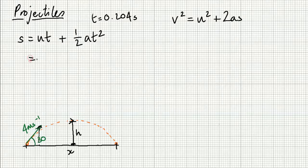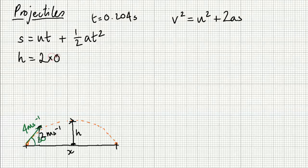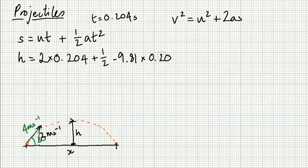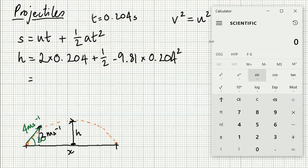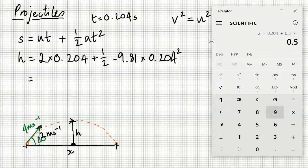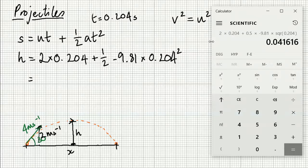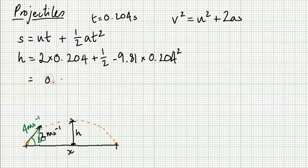You're very welcome to do whichever way you like. So s in this case is the height — that's what we want to work out. U, the vertical component, was 2 ms⁻¹. Time is 0.204 seconds. We know all this data, so we can go ahead with the calculator and work it out. The height comes out as 0.204 metres.